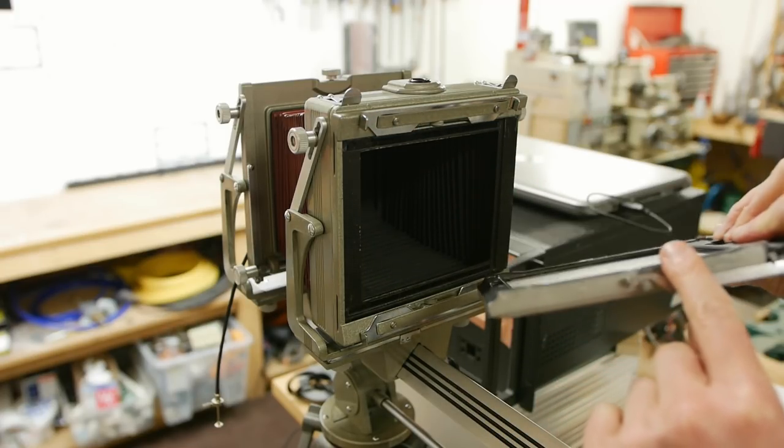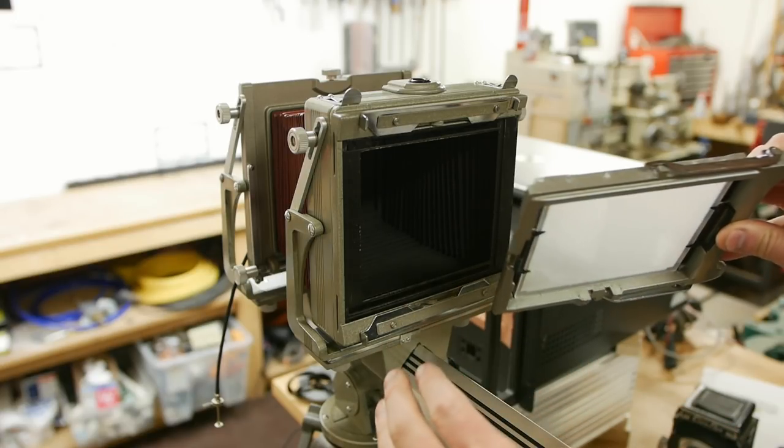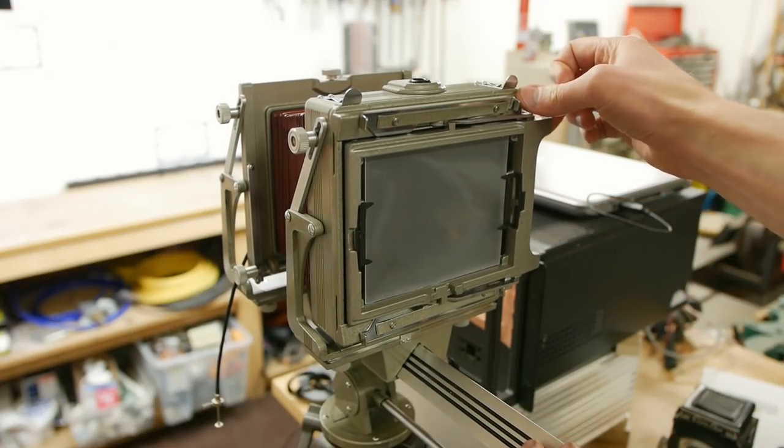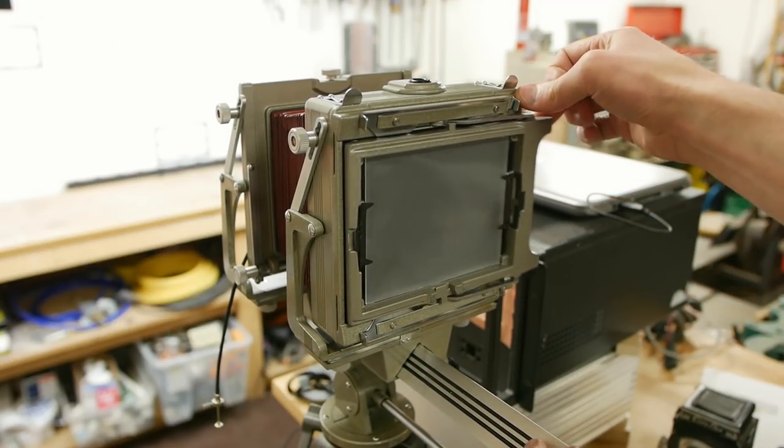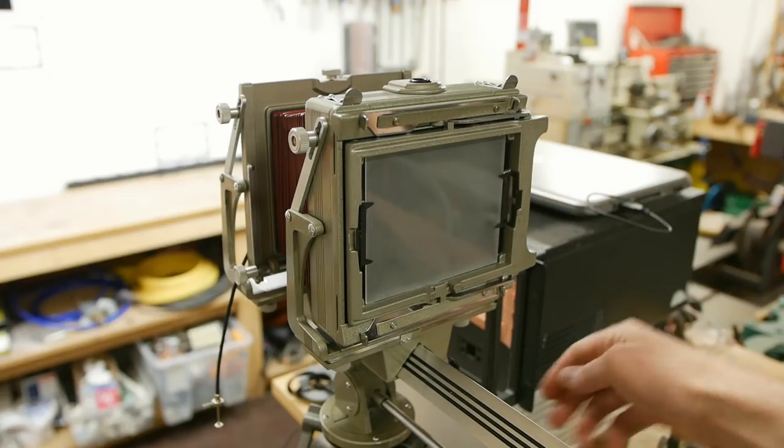The trick is that the distance from this flat piece of metal on the back to the very surface of this ground glass screen is super well controlled. In this camera, it happens to be exactly 0.2 of an inch.